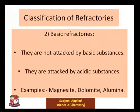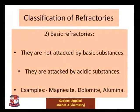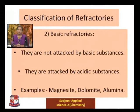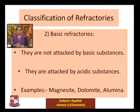The second category is basic refractories. These are not attacked by basic substances but are attacked by acidic substances. Examples include magnesite, dolomite, and alumina.